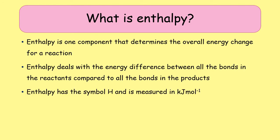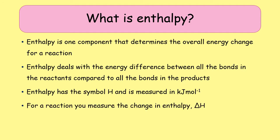Enthalpy has the symbol H and it's measured in kilojoules per mole. Because you're looking at how enthalpy has changed in a reaction, you'll more likely see it as delta H — that symbol that looks like a triangle — meaning change in enthalpy.